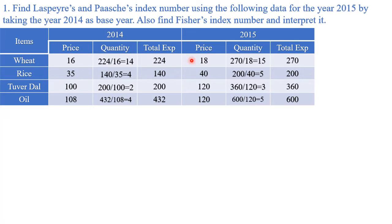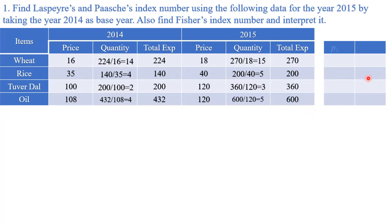When calculating Laspeyres', Paasche's, and Fisher's index numbers we need four columns: p1·q0, p0·q0, p1·q1, and p0·q1. Out of these, p0·q0 and p1·q1 are already available, so only two columns need to be created: p1·q0 and p0·q1. For p1·q0, multiply current year prices with base year quantities. Similarly, p0·q1 is base year price multiplied with current year quantity.